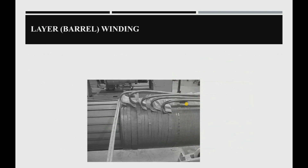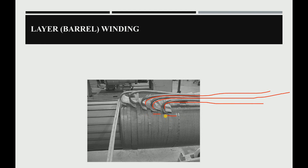The third formation is called the layer or parallel winding. This formation is used in the tap changer transformer — that is, a transformer with a tap changing function. You can see this part going outside the transformer, which represents the taps. You can count one, two, three, four, five — five taps — and the tap changer is used to change the number of turns of the transformer.